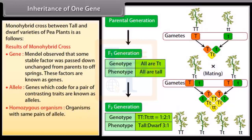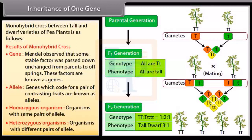Homozygous organisms: organisms with same pairs of alleles. Heterozygous organisms: organisms with different pairs of alleles. Results of monohybrid cross.